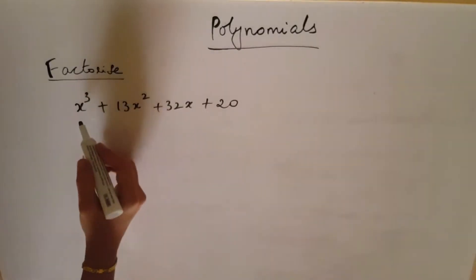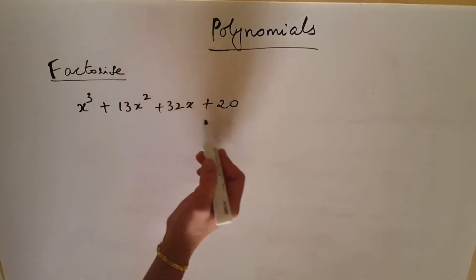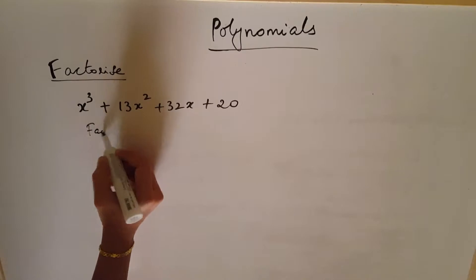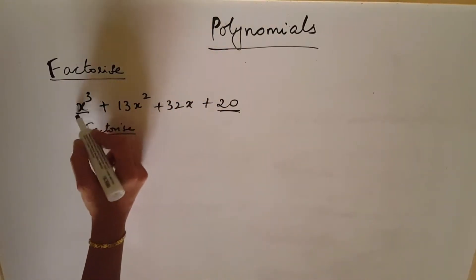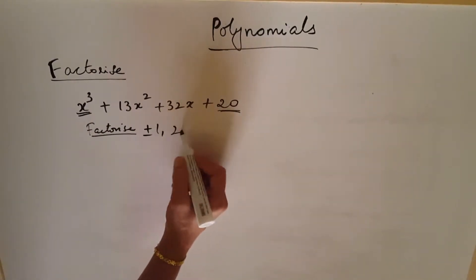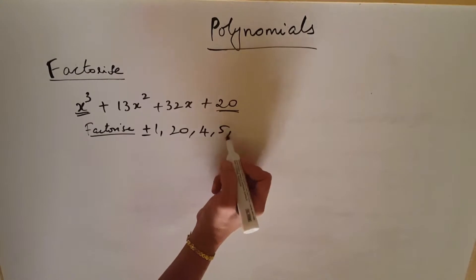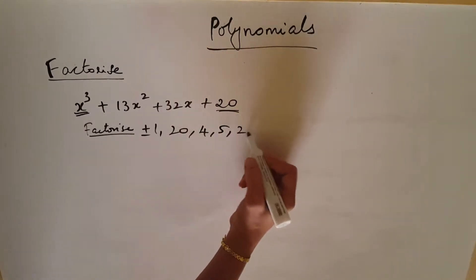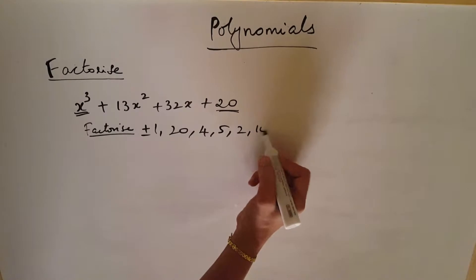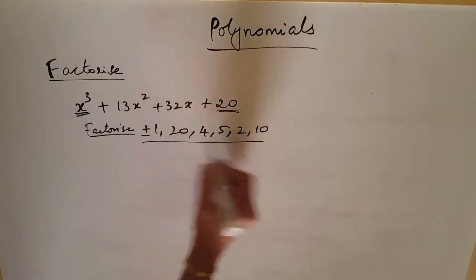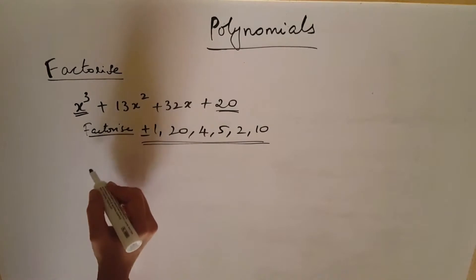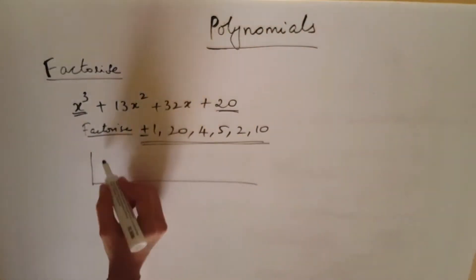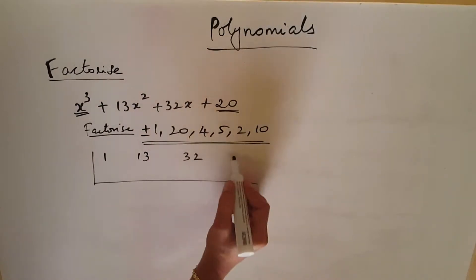Now in this question: x cubed plus 13x squared plus 32x plus 20. For factorization we check factors of 20, which are plus or minus 1, 2, 4, 5, 10, 20.